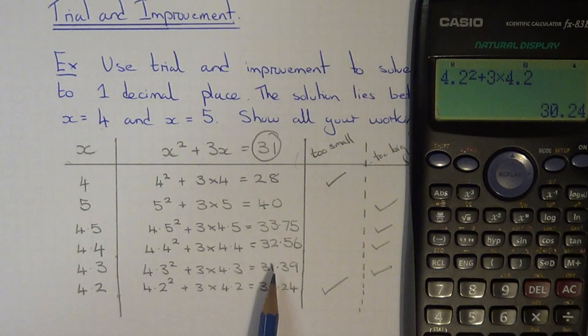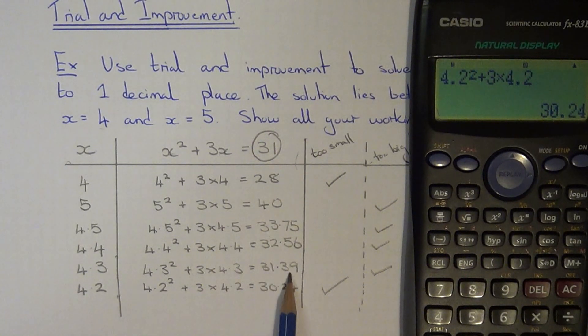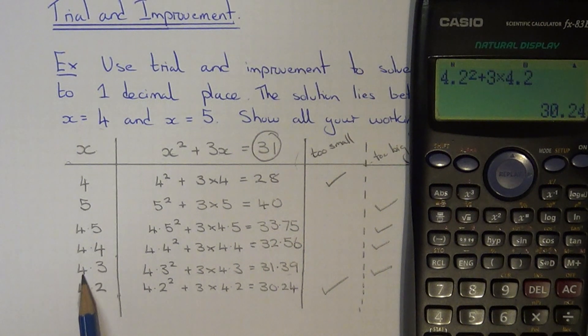So 4.3 was too big and 4.2 was too small, so you should be able to see now which one was our closest answer to 31. So the closest answer to 31 was 31.39, so on the answer line you can write down 4.3.